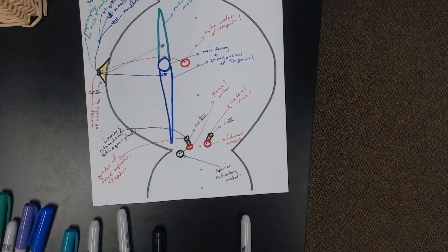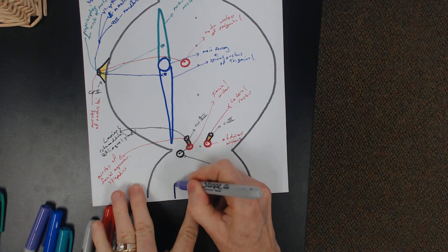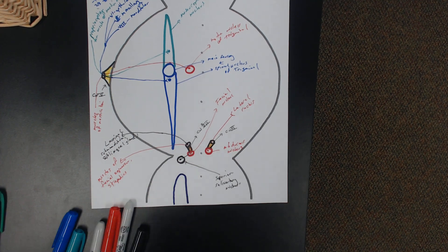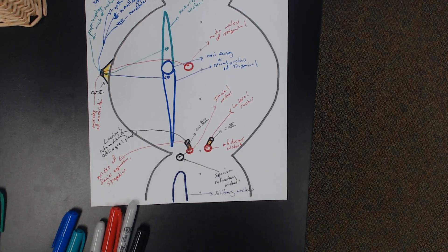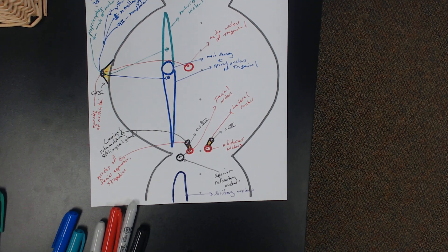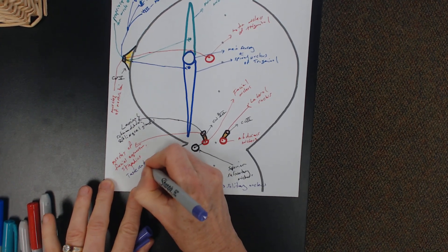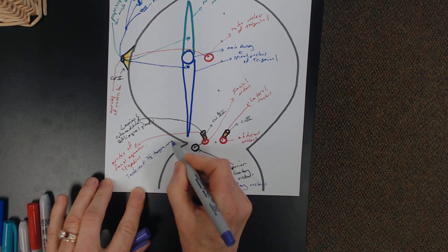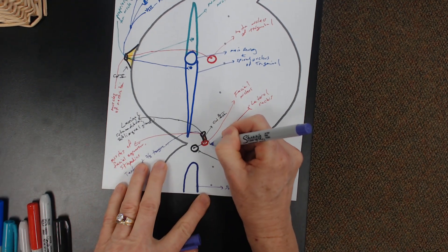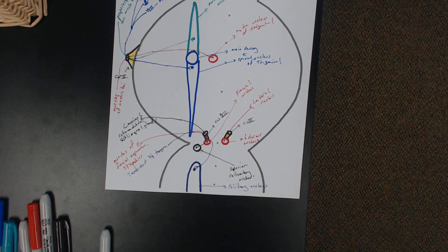Other functions for cranial nerve number seven — taste. For taste, we have to draw in the solitary nucleus, which resides down in the medulla. The solitary nucleus is involved with taste — specifically, taste of the anterior two-thirds of the tongue, traveling through cranial nerve number seven and synapsing on the solitary nucleus.